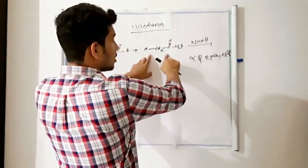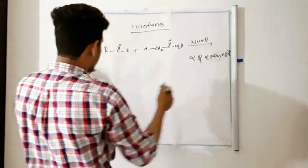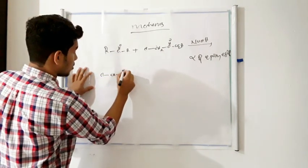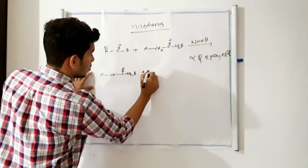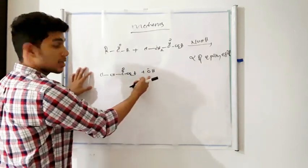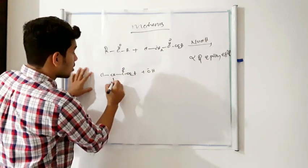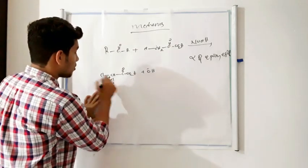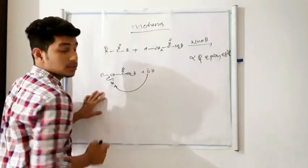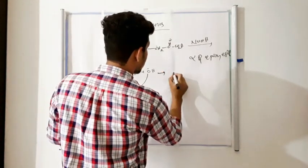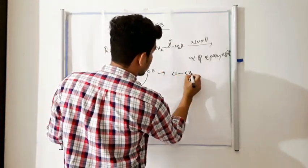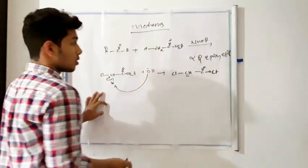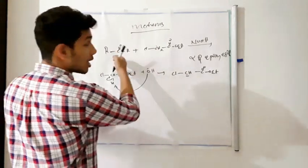First, we take the alpha-halogenated ester reacting with a base. The OH minus abstracts H plus from the alpha-halogenated ester. When this bond shifts and H plus is removed, a carbanion (enolate) is formed.